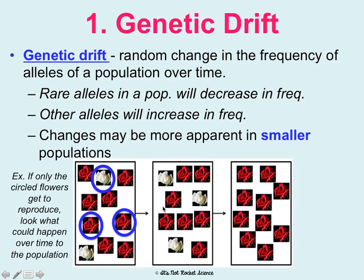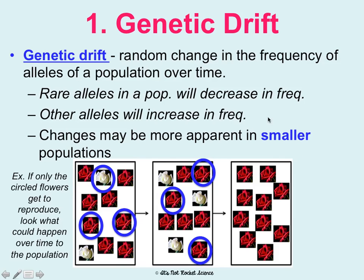The next generation would show 30% of the population ending up white and 70% red. Then, if again just a random selection of organisms are able to reproduce, we could end up with a population that's all red. So rare alleles — such as the recessive allele for white — become less frequent and others become more dominant. It's just a random change, and it would have a much bigger effect in a small population.